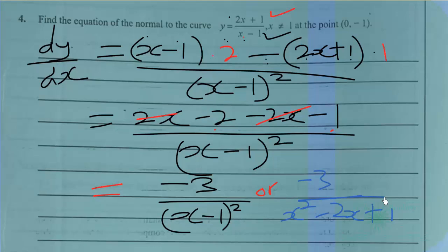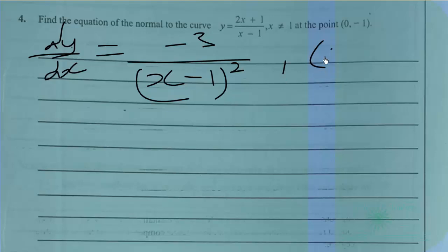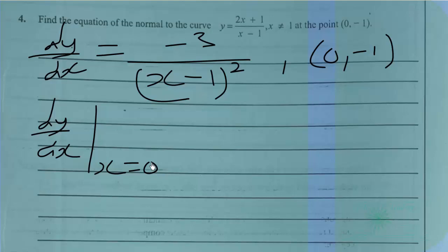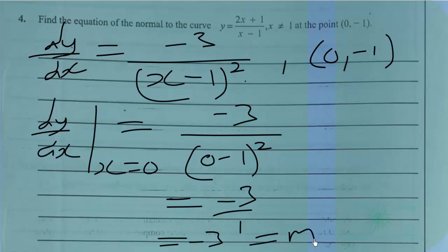We now substitute x = 0 to find the gradient of the curve at the point (0, -1). So dy/dx at x=0 gives us -3/(0-1)² = -3/1 = -3. Therefore the gradient m = -3.